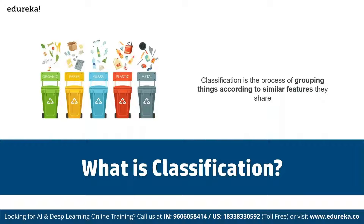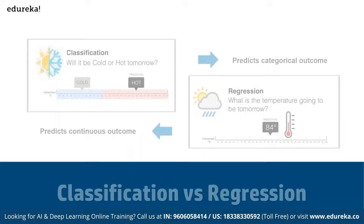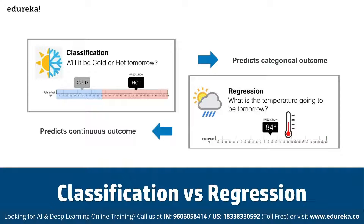We can make use of classification algorithms for such problems. In terms of algorithm types, we have binary classification and multi-class classification. Comparing classification with regression: classification predicts categorical outcomes like whether it will be hot or cold tomorrow, while regression focuses on predicting continuous outcomes like the exact temperature tomorrow.